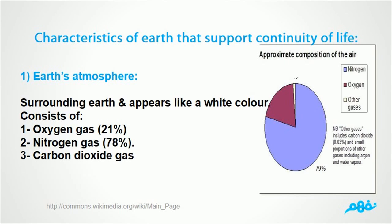Characteristics of Earth that support the continuity of life. 1. Earth's atmosphere: surrounding Earth, it consists of oxygen gas 21%, nitrogen gas 78%, and carbon dioxide gas.